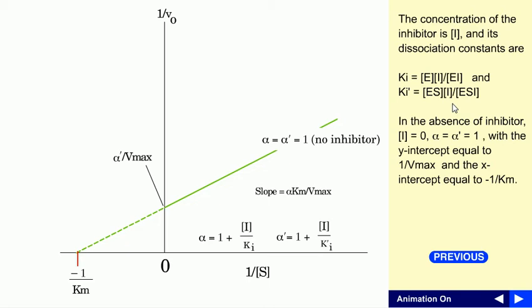In the absence of the inhibitor, when I equals 0, α will be 1 because I/Ki equals 0, and α' will also be 1. So we have 1/Vmax at the Y-intercept and minus 1/Km at the X-intercept — everything is the same as the uninhibited case.